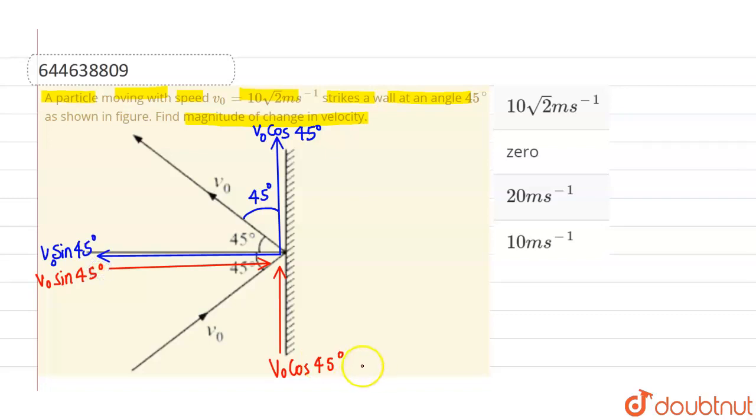Now, if you look in this vertical direction that initially it was moving with v0 cos 45 degree in this particular direction and after striking with the wall or after colliding with the wall, it is again moving with same velocity v0 cos 45 degree in the same direction. So the change in velocity along y axis is zero.